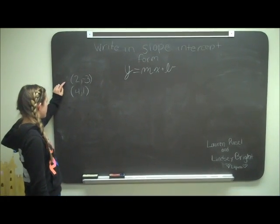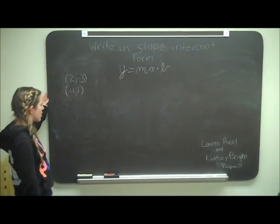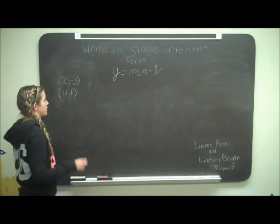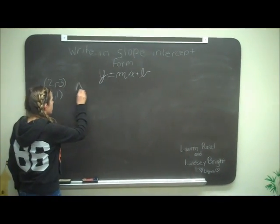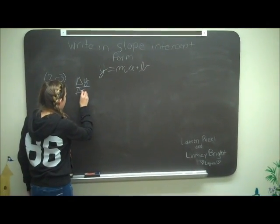First, take your two points, which are (2, -3) and (4, 1), and find the slope, which is delta y over delta x.